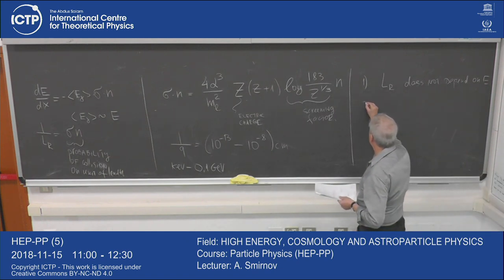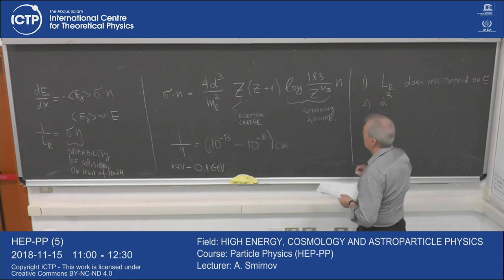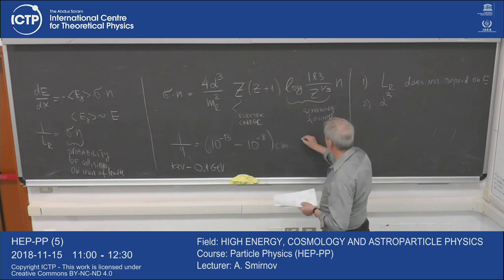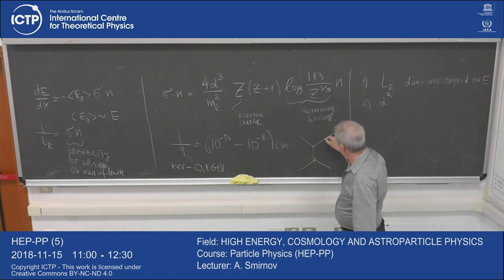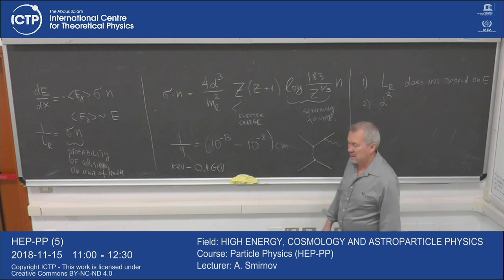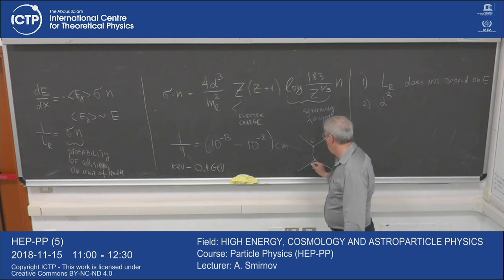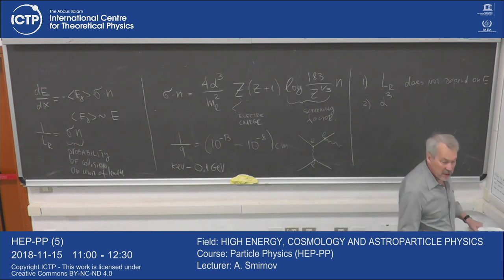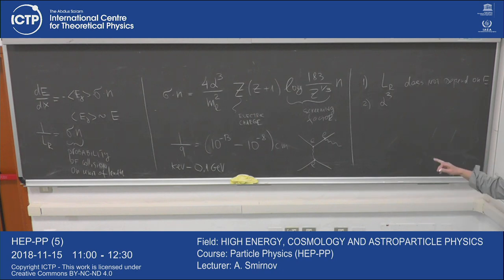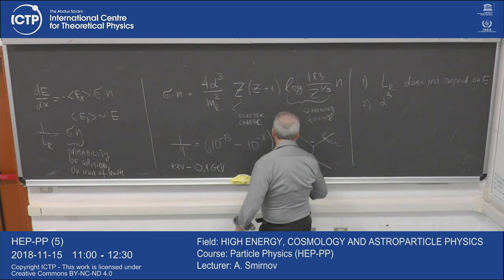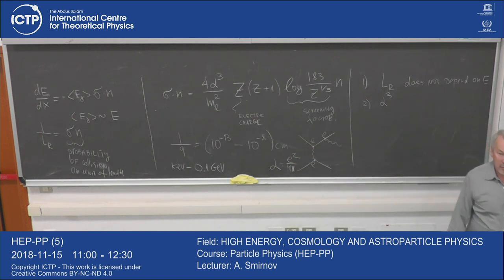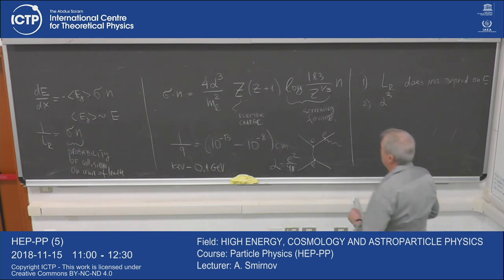Let me give a physics derivation of this formula that at least allows one to understand the dependence of σ·N on different parameters. First, notice there is no energy dependence here, so our assumption that L_R doesn't depend on energy is confirmed. The factor α³ originates from the fact that we have a third-order process: there are three vertices — the incoming particle interacts, a photon is exchanged, and a photon is emitted. Three elementary interactions each produce a factor of e (charge), and when we compute probability we square the amplitude, giving α³.